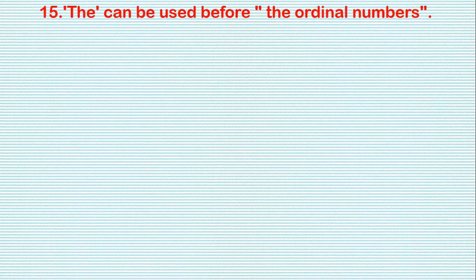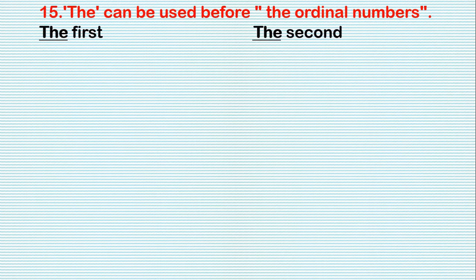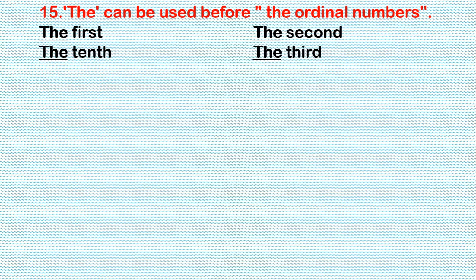Rule 15: 'The' can be used before ordinal numbers. For example: the first, the second, the tenth, the third, etc.